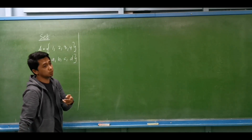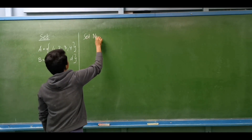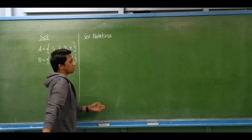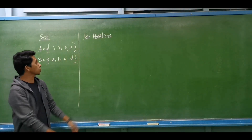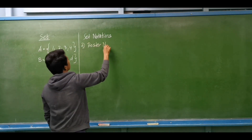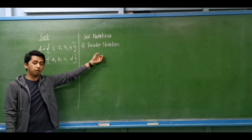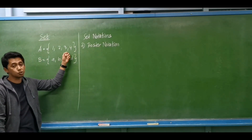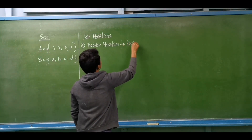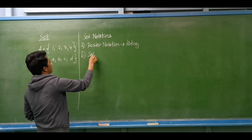We have two ways to present a given set — we call them the set notations. Set notations describe how to present a given set. The first one is the roster notation. For roster notation, we enumerate or list the elements of a given set. The second one is the set builder notation.